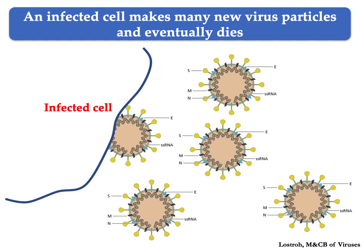Ultimately, the single-stranded viral RNAs are translated by the cell's ribosomes, and the result is the production of hundreds of offspring virions, which are released from the infected cell. The infected cell is so depleted by all this viral RNA and protein synthesis that it eventually dies.